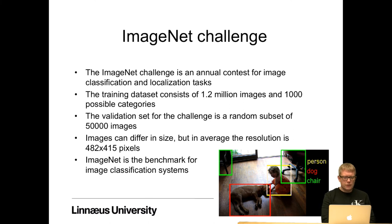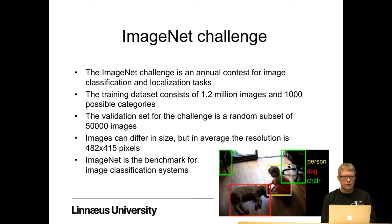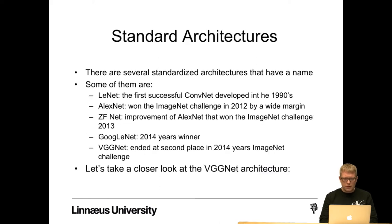The ImageNet challenge is an annual contest for image classification and localization tasks. The training dataset consists of around 1.2 million images and 1,000 possible categories — an extremely complex image classification task. The validation set for this challenge is a random subset of 50,000 images. Images can differ in size, but on average the resolution is 482x450 pixels. And the ImageNet is the benchmark for image classification systems.